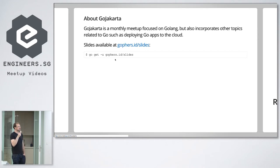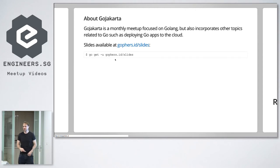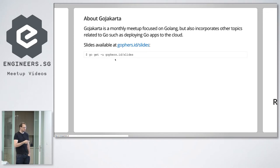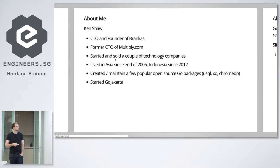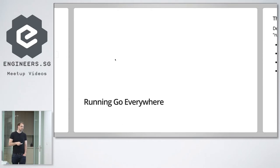So, Go Jakarta — we've got slides, and this is the magic URL. My pointer doesn't work, but the URL is there. It is Go-gettable and should be up right now. My slides are on there from a previous talk I adapted from a presentation I did in January at Tokopedia. Without further ado, I'll get into Run Go Everywhere.